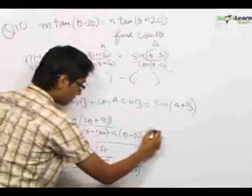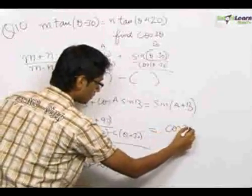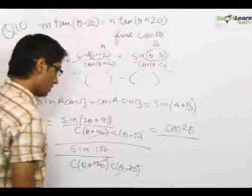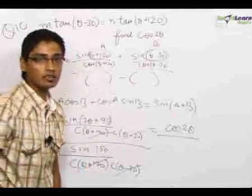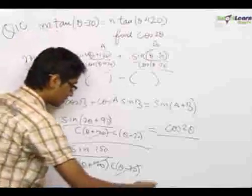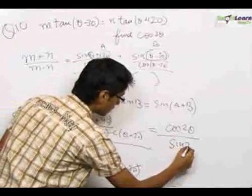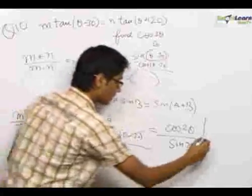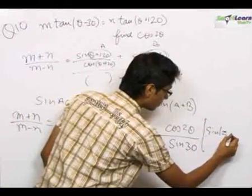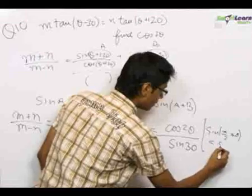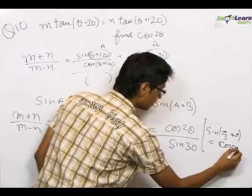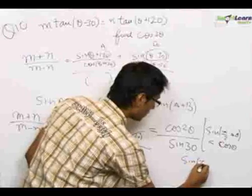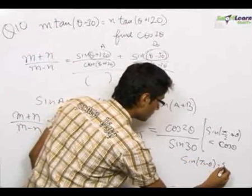Now, sin(90° + θ) equals cos 2θ, and sin(150°) equals sin(π - 30°) which equals sin 30°. The two key identities used here are: sin(π/2 + θ) = cos θ, and sin(π - θ) = sin θ.